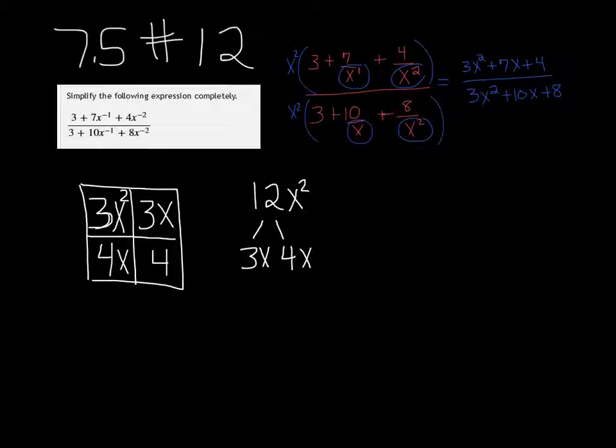Factor the GCF out of the top two, and we get 3x. Factor the GCF out of the bottom, and we have 4. If you take 3x out of 3x squared, you're left with an x, and if you take 3x out of 3x, you're left with a 1. So our factors are 3x plus 4, and x plus 1.